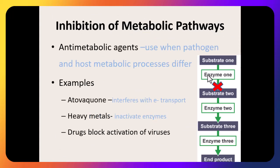Another class inhibits metabolic pathways. Bacteria take a substrate and through a series of enzymes convert it step-by-step into a needed end product. Drugs can target any enzyme along that pathway, blocking production of the end product. Because there are so many steps, there are many possible drug targets. If bacteria can't make whatever they need, they'll ultimately die.